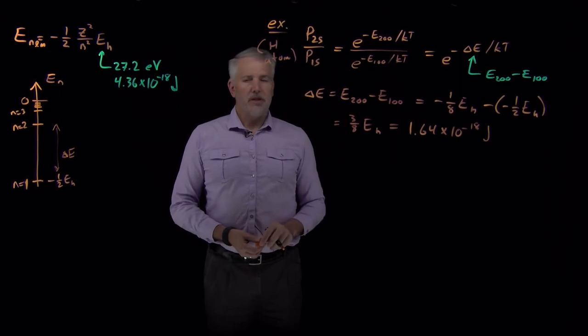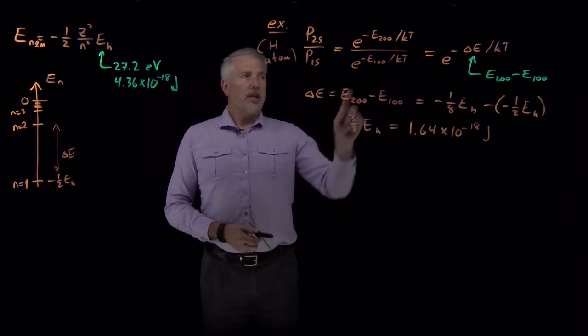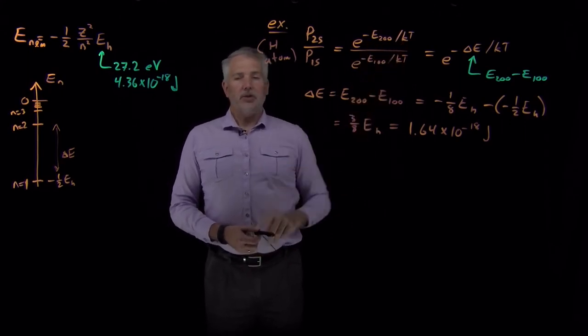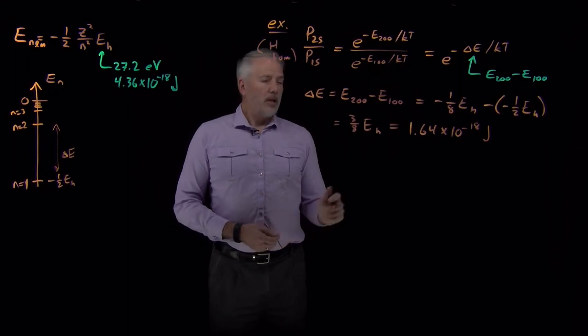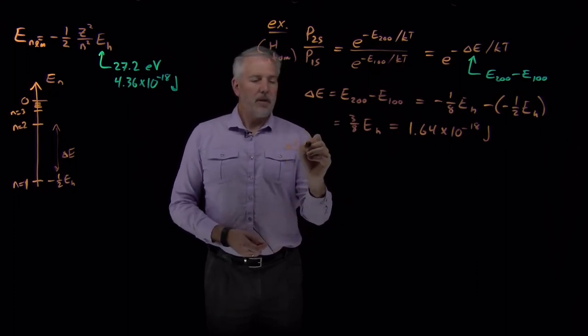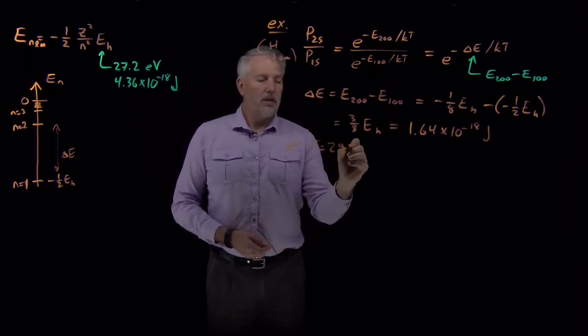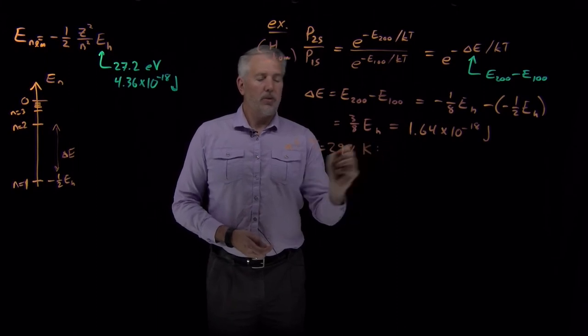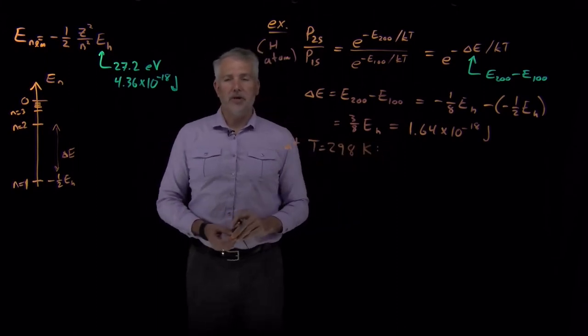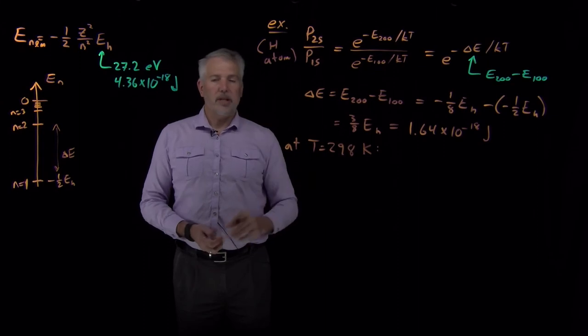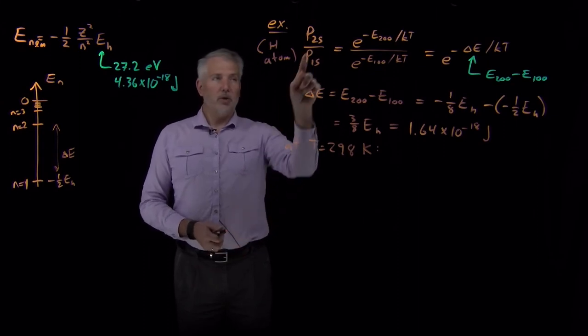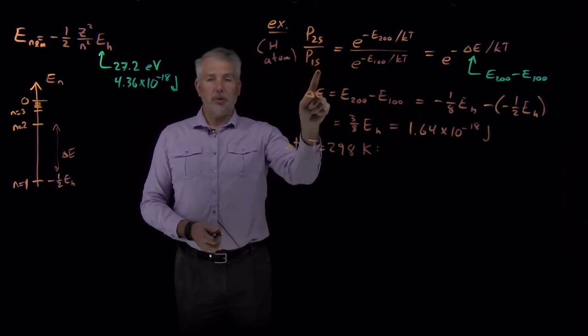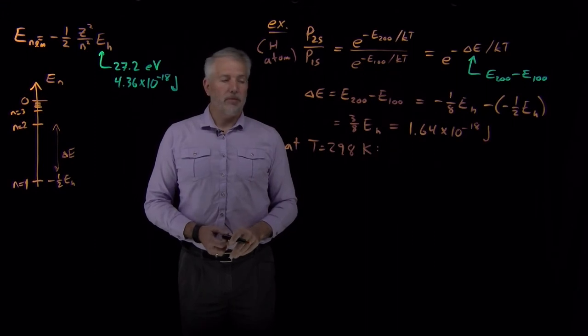That number by itself is not terribly meaningful. What's meaningful is the ratio of that energy to kT. So we'll need to know what temperature we're interested in. Let's say we've got some hydrogen atoms at room temperature, 298 Kelvin, and we'd like to know how likely it is that they're in the 2s orbital relative to the probability of being in the 1s orbital.